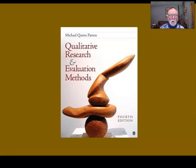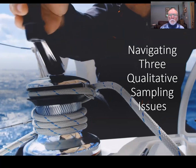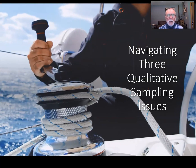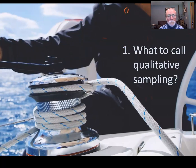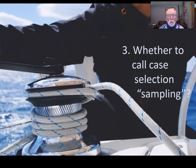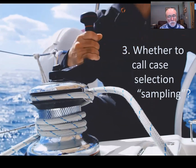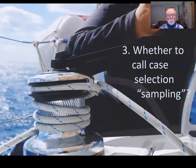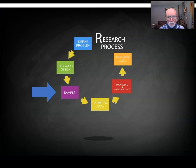I'm Michael Quinn Patton and I've been working on these issues for over 40 years. The first edition of Qualitative Research and Evaluation Methods came out in 1980, and as the field has grown and become more diverse and more credible, issues around sampling remain at the nub of controversy. So we're going to look at how to navigate three qualitative sampling issues: what to call qualitative sampling, the sample size issue, and whether to call what we're doing case selection or to actually use the word sampling.